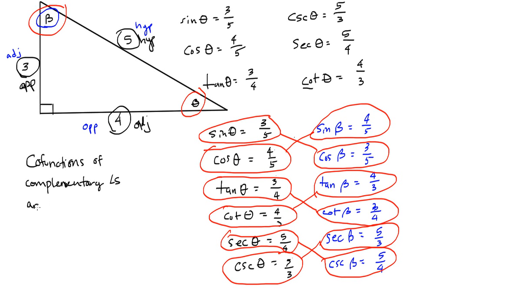So, here's the fancy way of saying it. The fancy way of saying it is that the co-functions of complementary angles are equal. Co-functions meaning sine is the co-function for cosine. Tan is the co-function of cotangent. Secant is the co-function of cosecant. These are co-functions of each other.